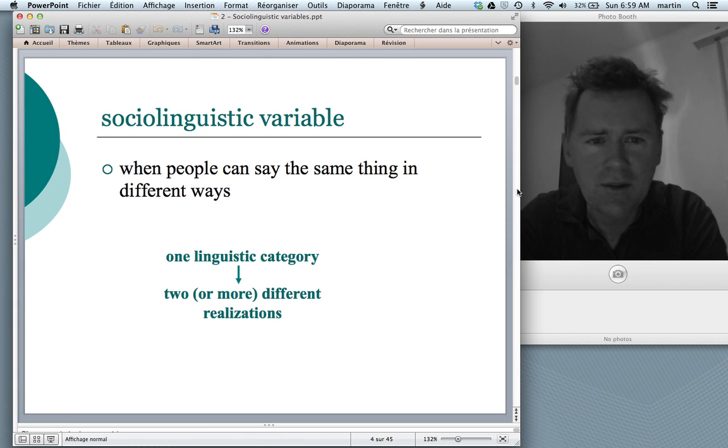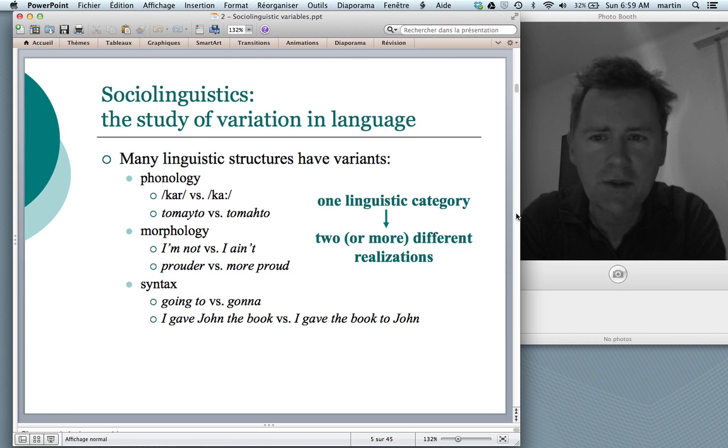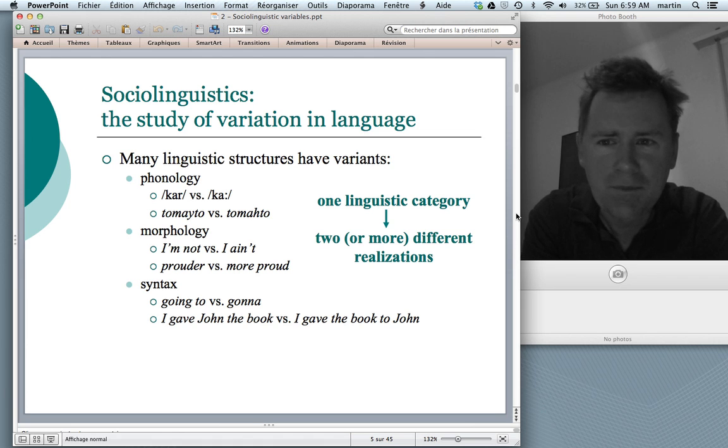All of this sounds pretty abstract so let me give you a few examples. Sociolinguistic variables have the word variable in there, so it's clear it's about variation. Many linguistic structures in fact have variants.